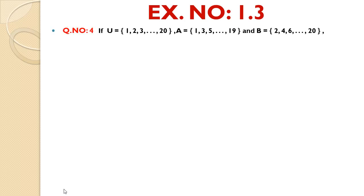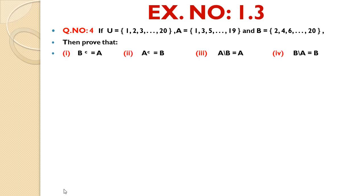Exercise number 1.3, Question number 4: If U = {1, 2, 3, ..., 20}, set A = {1, 3, 5, ..., 19} (odd numbers from 1 to 19), and set B = {2, 4, 6, ..., 20} (even numbers from 2 to 20), then prove: (i) B complement = A, (ii) A complement = B, (iii) A - B = A, (iv) B - A = B.